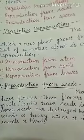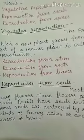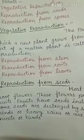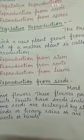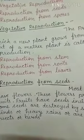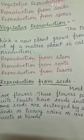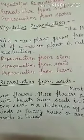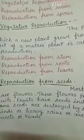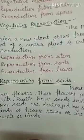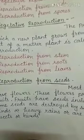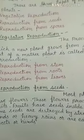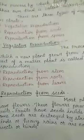The onion, lily, and tulip are underground stems and they are called bulbs because they are shaped like bulbs.